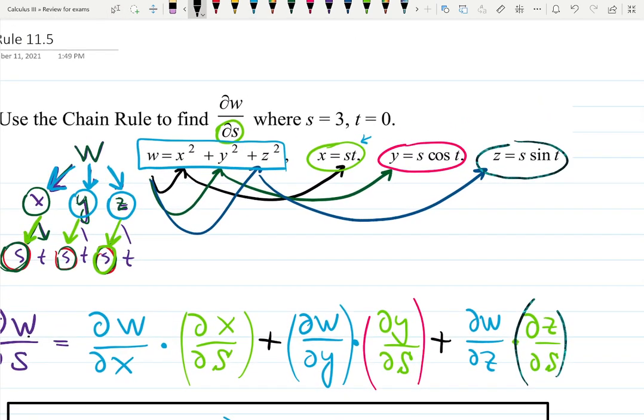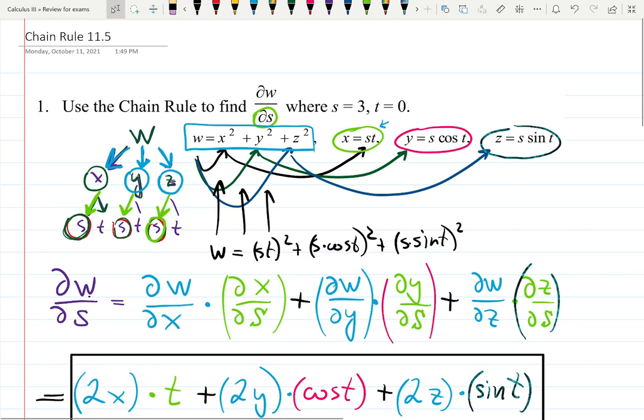...like plugging X, Y, and Z into the original equation, building the function W which is ST² + S cosine²T + S sine²T. Do not do that. You're actually not supposed to - yes you can if you want to and the derivative will be easier, you just need to differentiate with respect to S and the answer will be the same, but we're expecting you to use the formula for the chain rule.